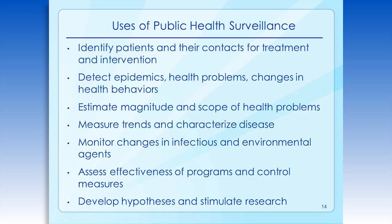Contact tracing and treatment are important parts of many sexually transmitted disease programs in this country, as is prophylaxis in the forms of antimicrobials or immune globulin for folks exposed to some forms of bacterial meningitis or hepatitis A, respectively. The magnitude and scope of surveillance help identify populations at high risk and target specific groups for intervention. Surveillance data has also helped us to identify the spread of emerging infections like West Nile and to monitor increased resistance to antimicrobials. We also use surveillance data to assess the effectiveness of programs and control measures, as well as to develop hypotheses and stimulate research.